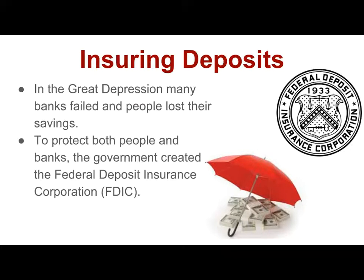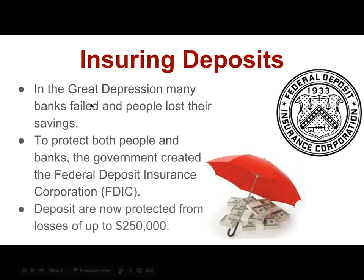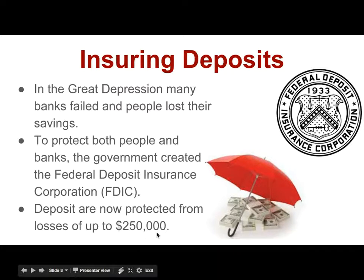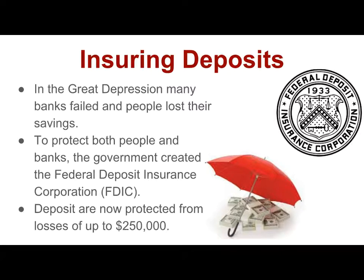The FDIC will guarantee your money and protect you. For banks that follow the rules of the FDIC — keeping a certain amount of cash in reserve and not making totally risky investments — the FDIC is going to protect them. In the event that they do go bankrupt, deposits are protected from losses of up to $250,000. So if you have a $200,000 bank account and the bank fails, the federal government will write you a check for $200,000. But if you have $400,000 at one bank spread amongst different accounts, you'd only get $250,000 back. So if you ever have more than $250,000 in savings, make sure it's spread across two different banks.